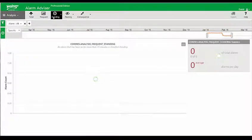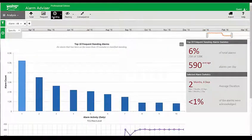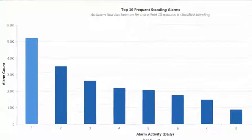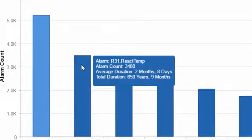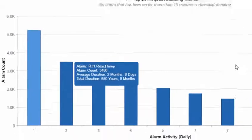The next tool gives me the ability to see standing alarms — alarms that have been on for a long period of time. If I hover over a specific period of time, it tells me how long it's been on and the average duration, so I can understand there are alarms out there that have been active for a long time. Let's go understand what's going on with those alarms and try to fix those problems.